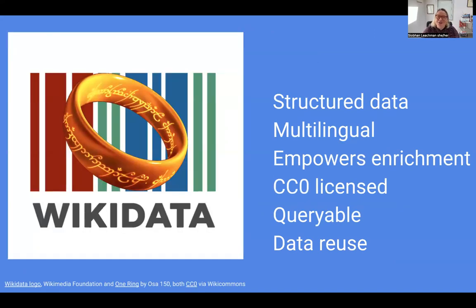As a New Zealander I'm obliged to work some sort of reference to the Lord of the Rings into my presentation, and this is it. Of all the projects I contribute to, the one project to rule them all is Wikidata. Wikidata is an openly licensed multilingual linked knowledge base. When I last checked, Wikidata had over 6.3 million people items alone. Wikidata can be edited by both people and machines and is constantly being enriched and improved. It also links to multiple other databases so it acts as a database hub, and can be queried to answer questions which might otherwise be really difficult to find a result for. All the data in Wikidata is CC0 licensed and so can be reused by anyone for anything.